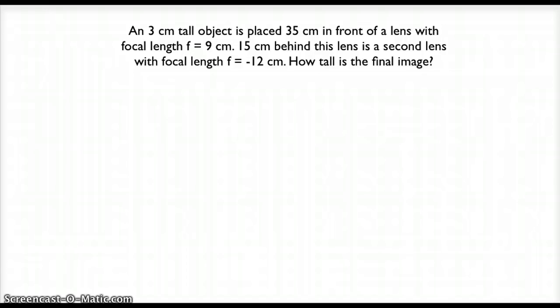If we can calculate the total magnification for this two-lens setup, then we could multiply our initial 3 centimeter height for our object times the total magnification, and that would tell us how tall the final image is.